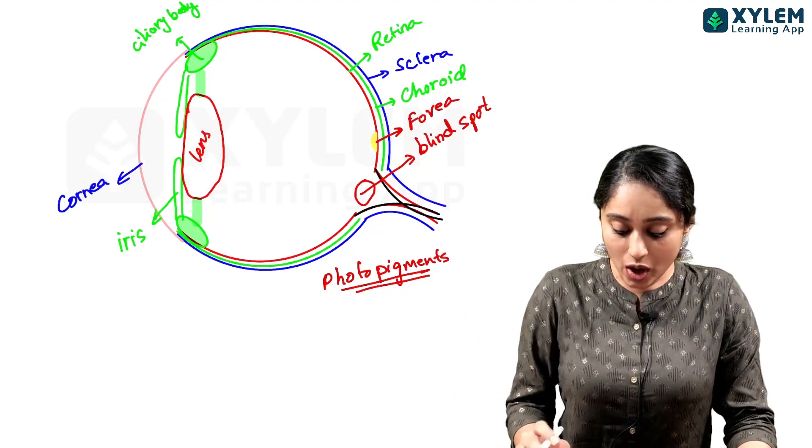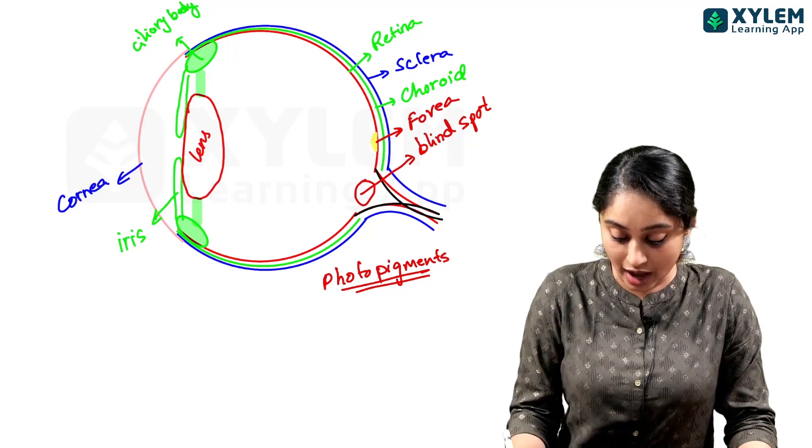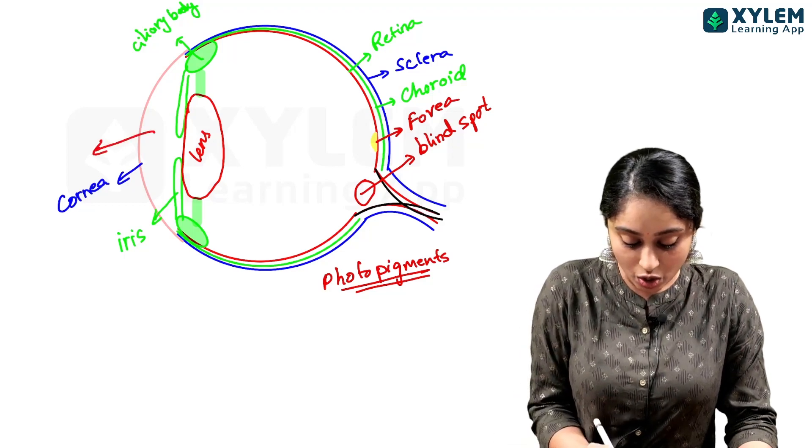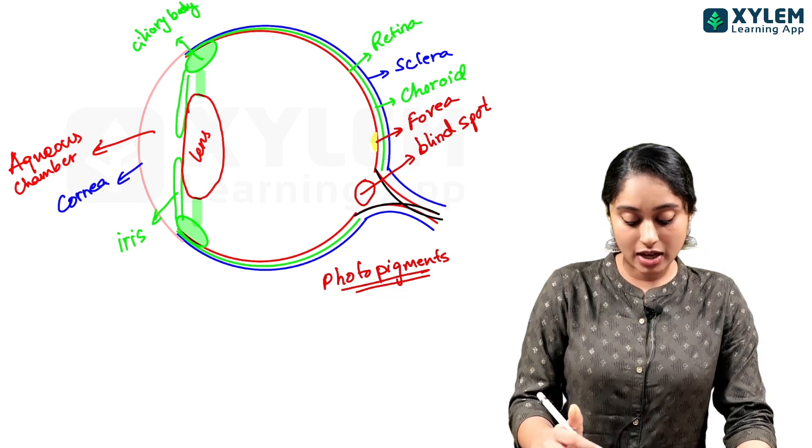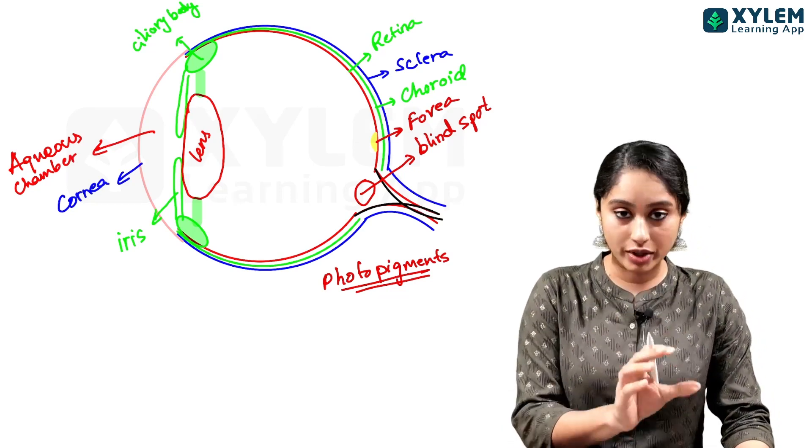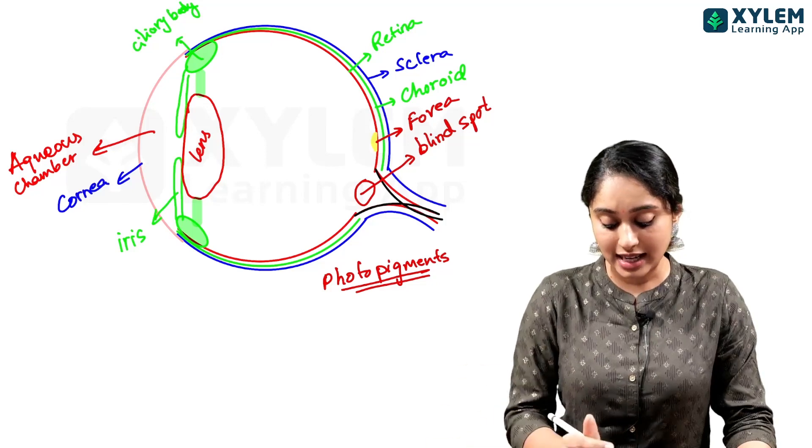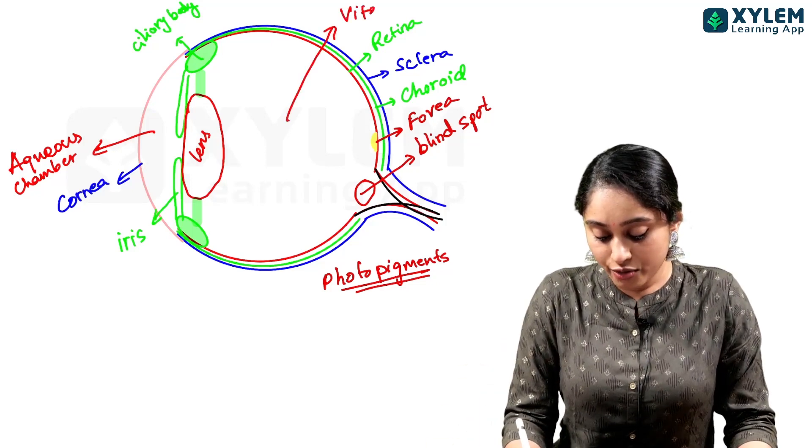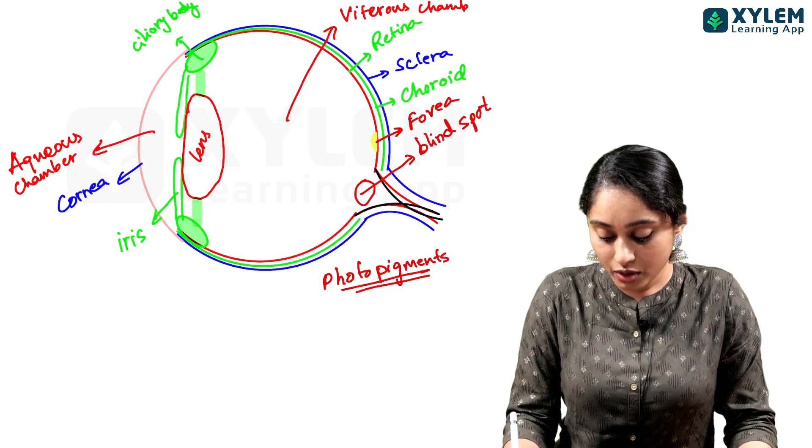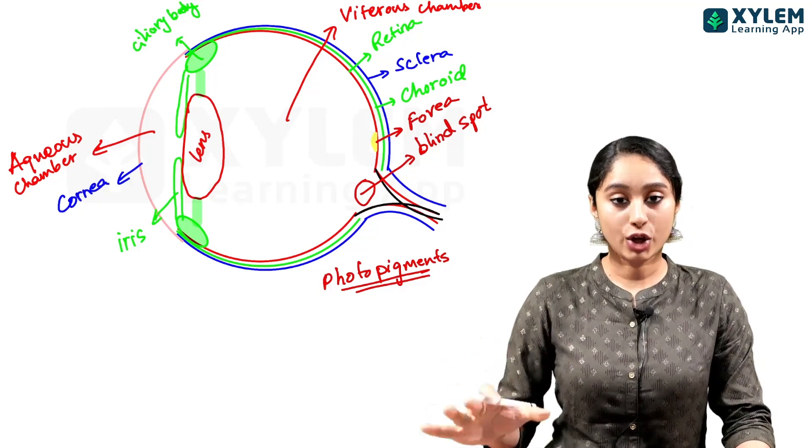In the front of the lens, we have a small region here called the aqueous chamber. And in the aqueous chamber, there is a fluid and that is called the aqueous humor. Behind the lens, in the chamber, we call it the vitreous chamber. And the fluid here will be called the vitreous humor.